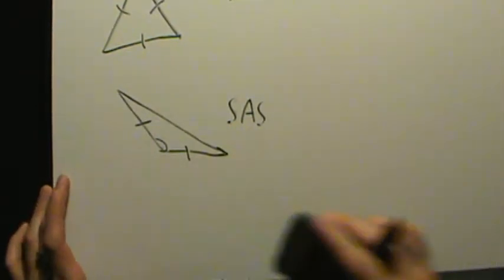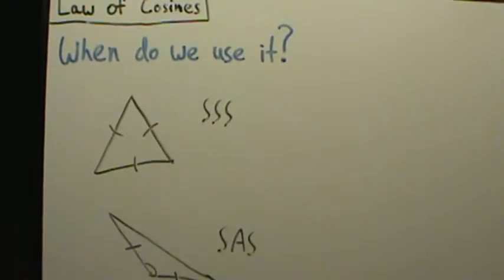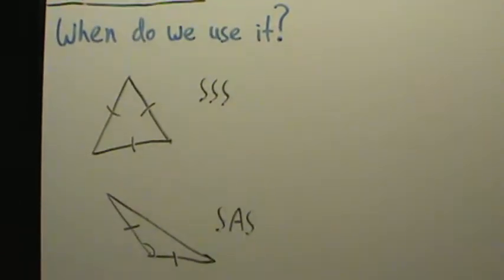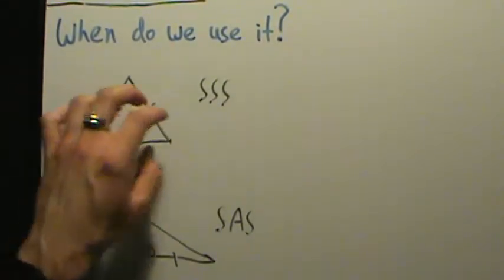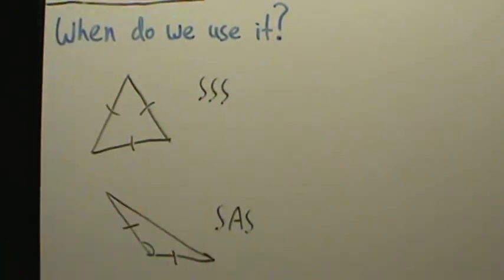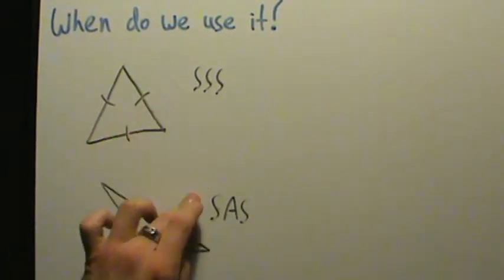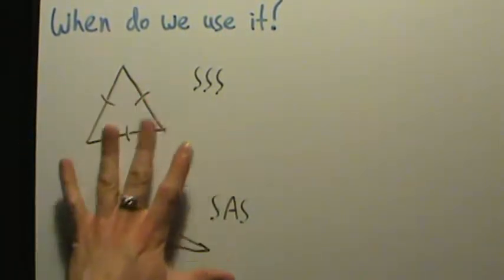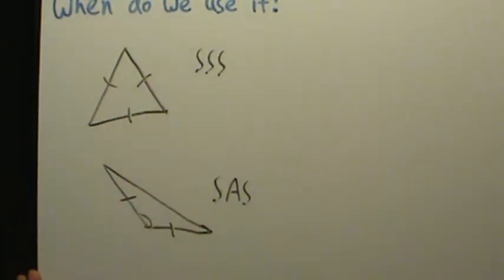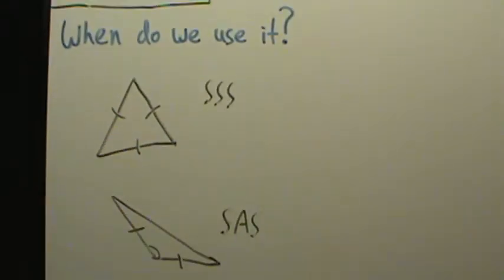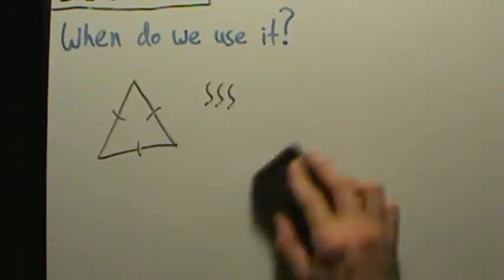What's nice about the law of cosines is there's no ambiguous case for SSS and SAS, so just stick with the law of cosines for these. For SSA, just stick with the law of sines. Although technically speaking you can use the law of cosines for SSA, I definitely don't recommend it.